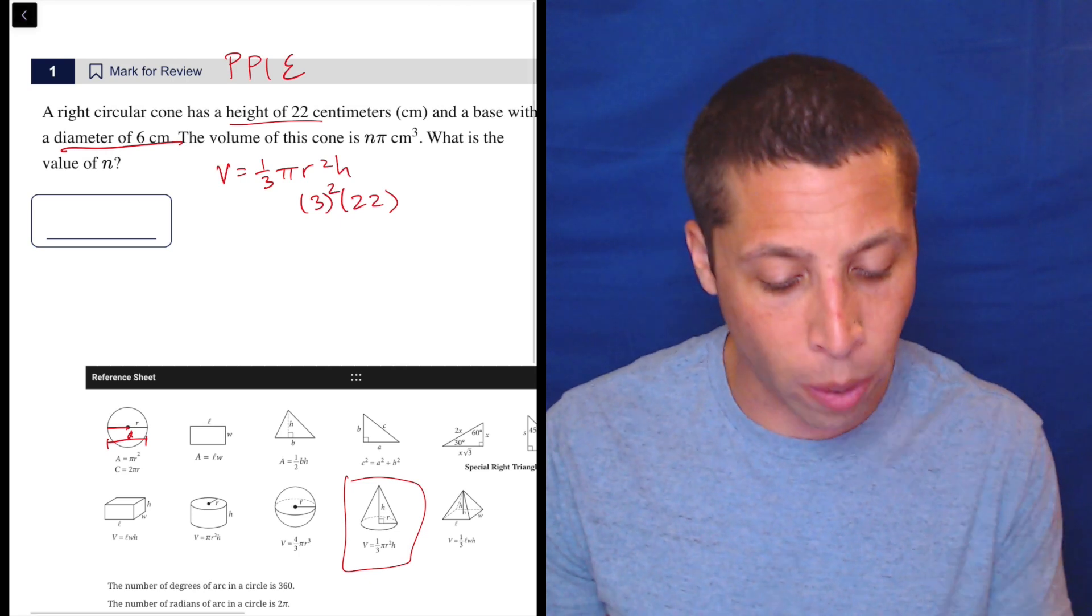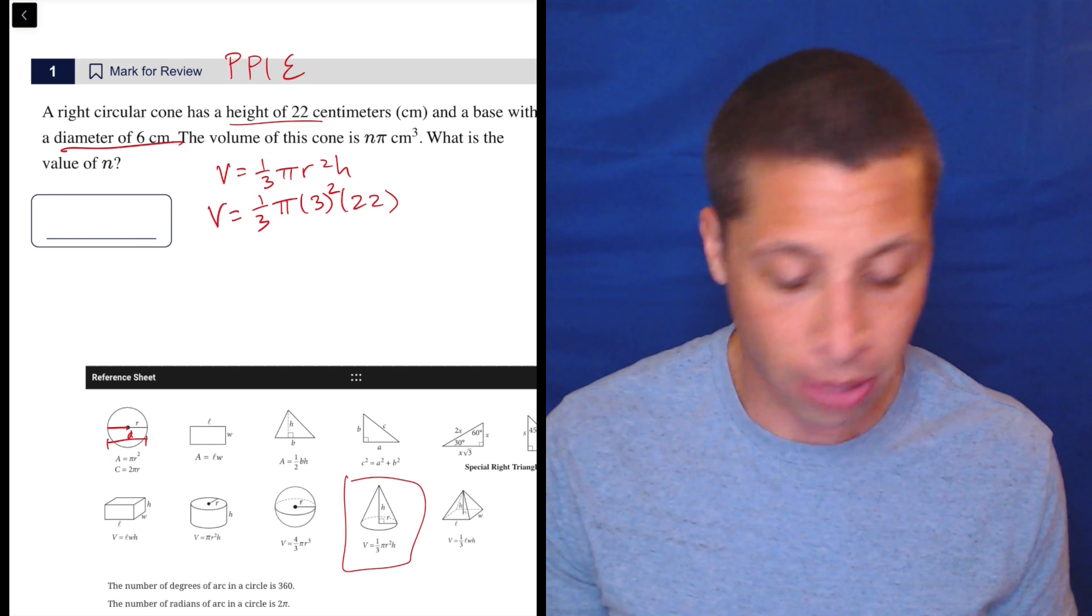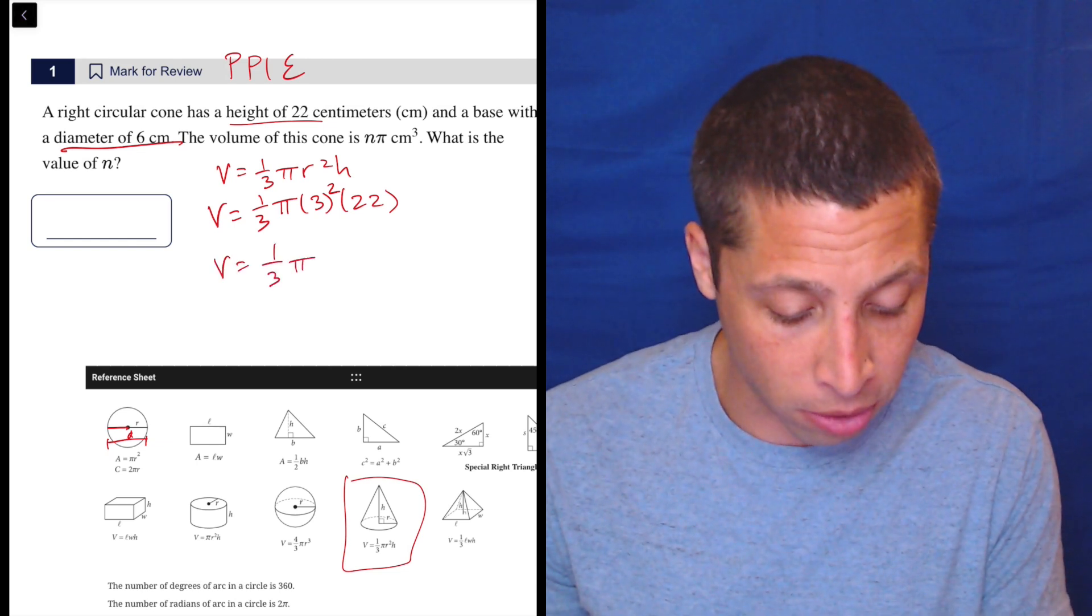And remember, we got to square that. The pi is just going to stay a pi and one third. And we're solving for the volume anyway. So let's just do all that, right? So you can put this in the calculator. Just because I'm lazy,